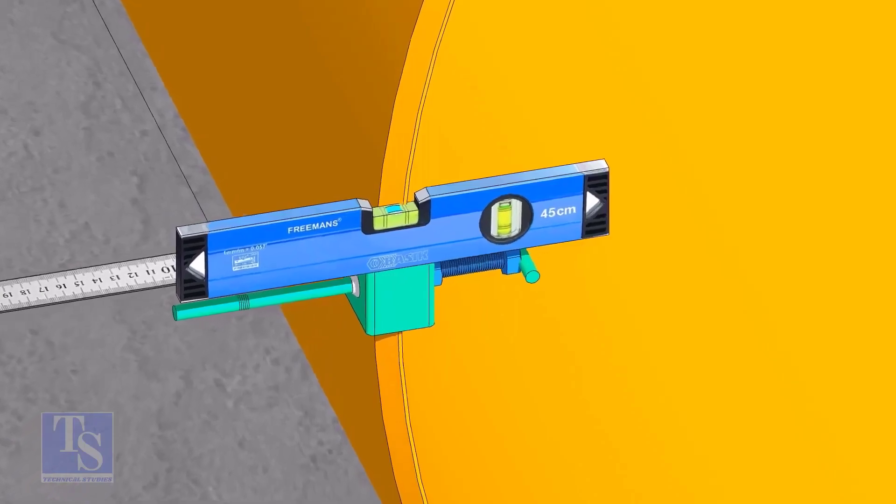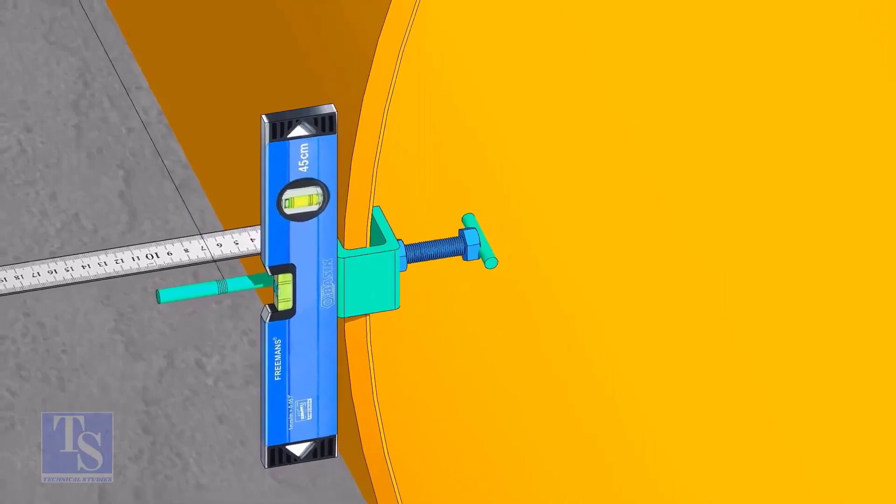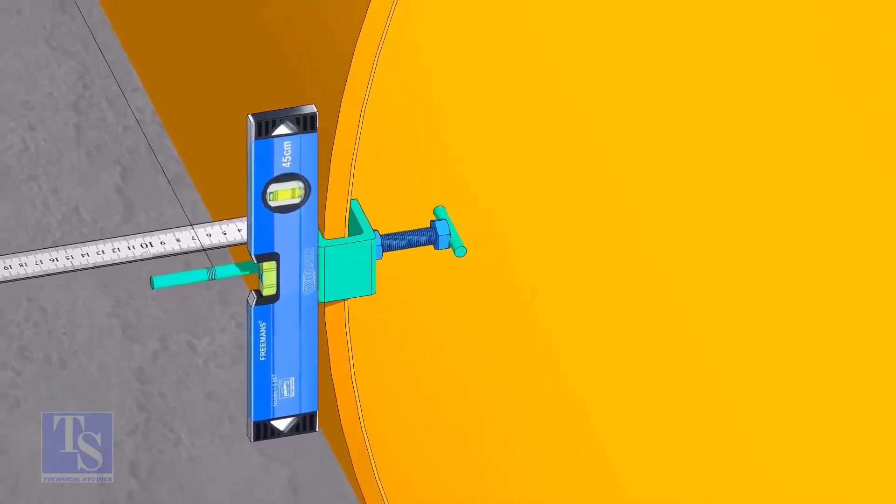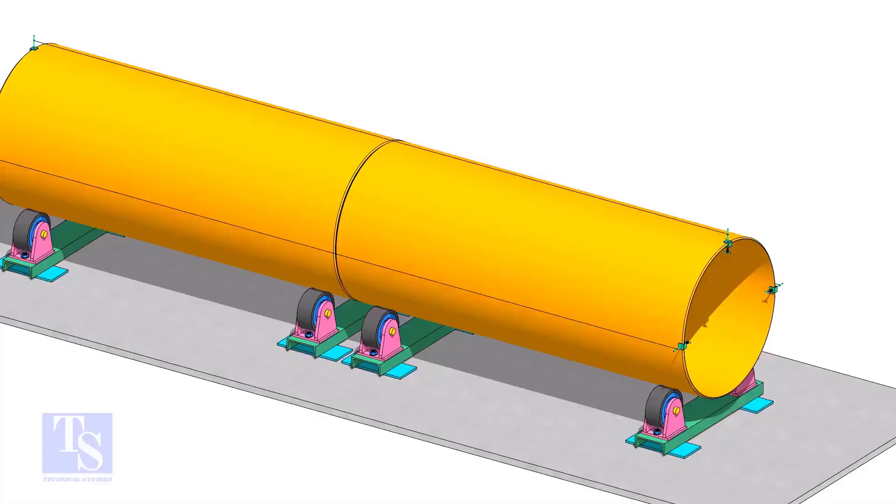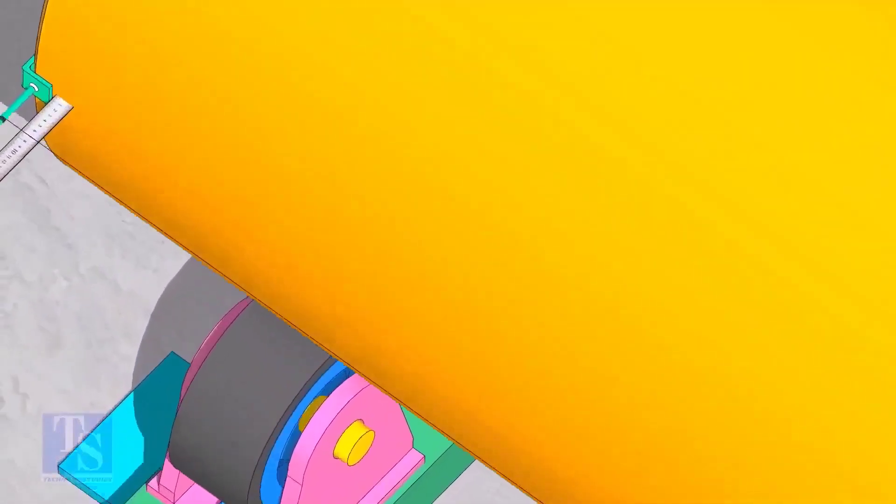As you put the clamp roughly 90 degrees apart, make sure the clamps are level. Tie the piano wire tightly on these clamps. Make sure the distance between the shell to the piano wire is equal at both ends.